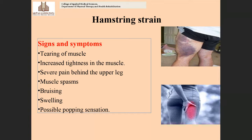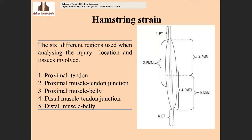The signs and symptoms of hamstring strain include tearing of the hamstring muscles, increased tightness, muscle spasm, severe pain in the upper posterior region of the leg, bruising (visible rupture of local blood vessels), swelling, and a possible popping sensation. These signs and symptoms are more or less the same as other soft tissue injuries.